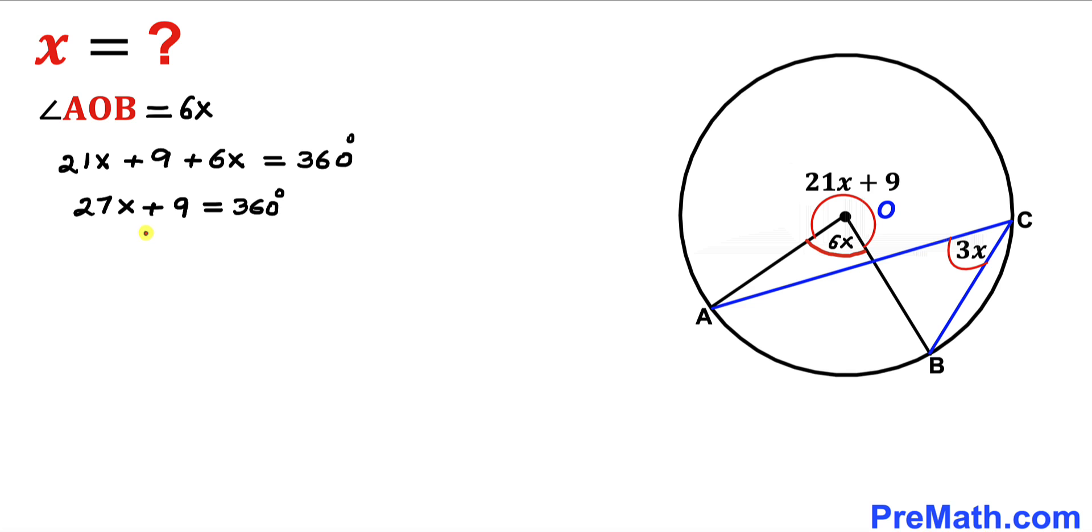Let's go ahead and subtract 9 from both sides. Therefore we got 27x equal to 351 degrees.